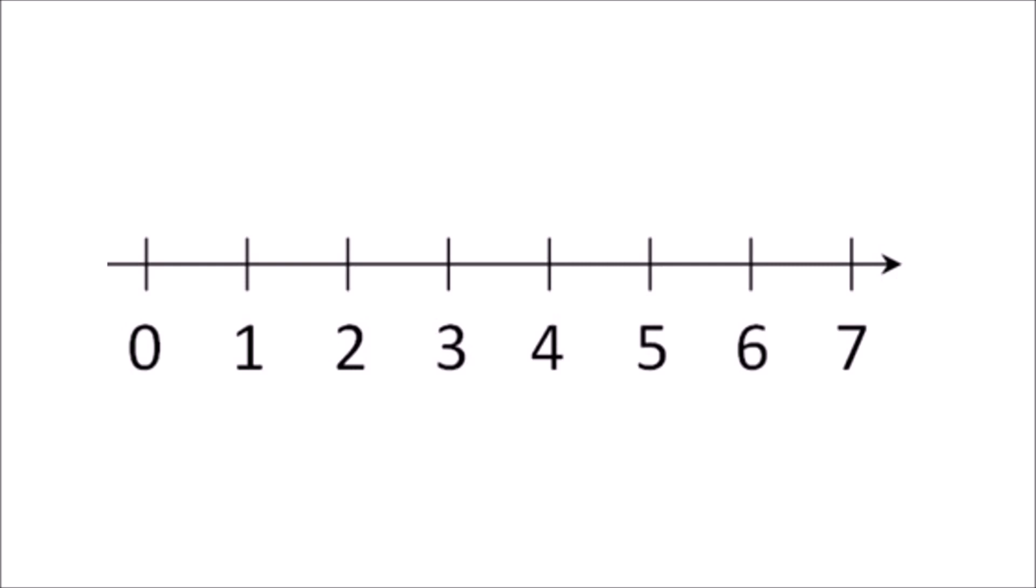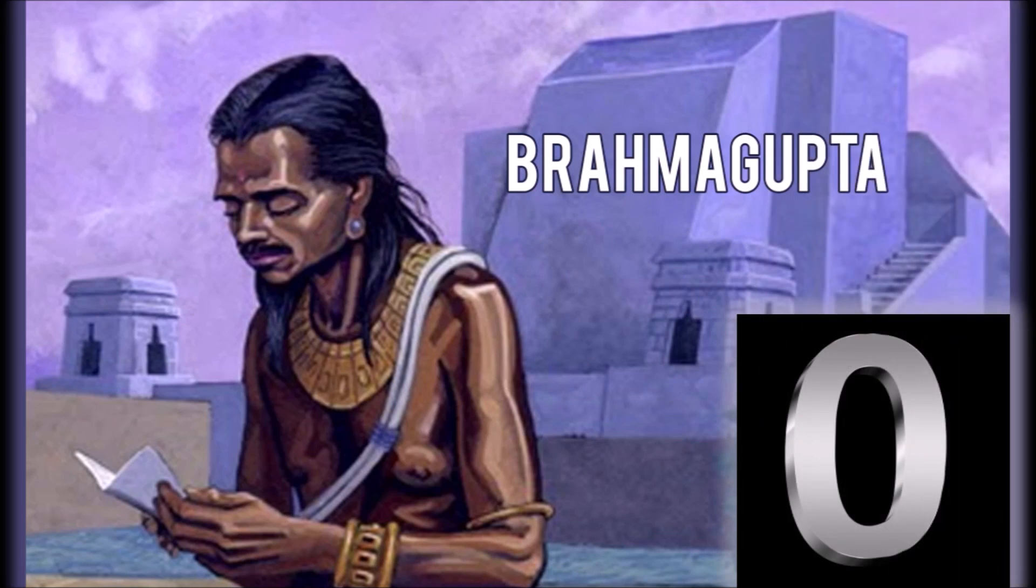We all know them. They are the natural numbers by which we count. And when Brahmagupta introduced this zero in the 7th century, the people assumed they knew every number they needed.